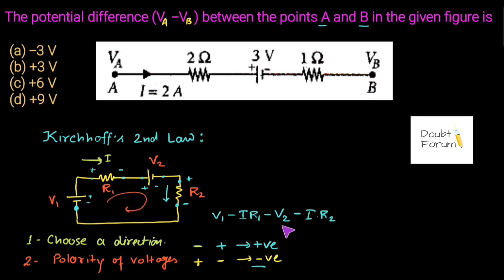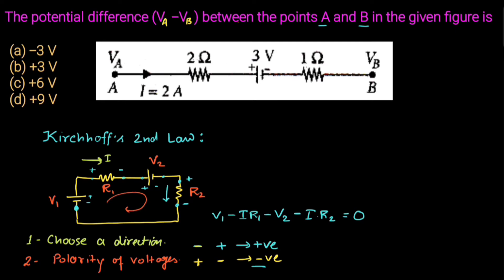This is the algebraic sum of all voltages across the different elements in the closed loop, and according to Kirchhoff's Second Law this sum equals zero. Now moving back to the question: there is a point V_A and another point V_B, with a 2 ohm and a 1 ohm resistor connected in between, a voltage source of 3 volts, and a current of 2 amperes flowing in the circuit.